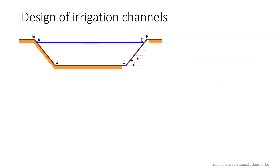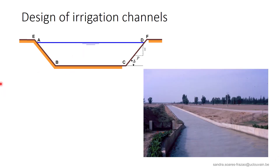A typical application of uniform flow is the design of irrigation channels. These channels are prismatic, often trapezoidal, with a constant slope, and hence the assumptions of the uniform flow are verified — except in non-prismatic reaches, for example in the widening at the foreground of the photograph.